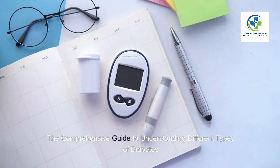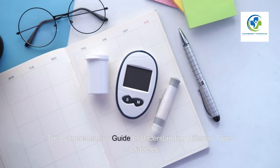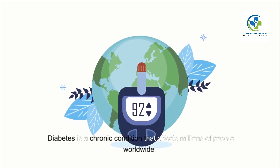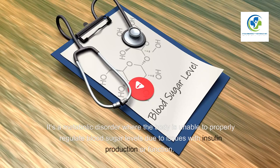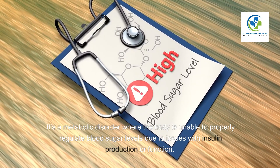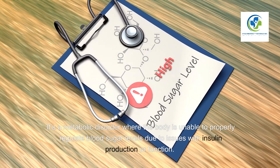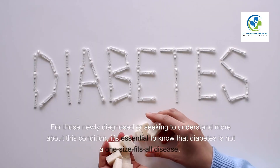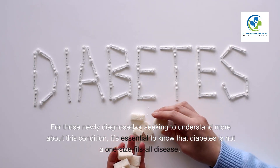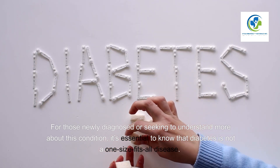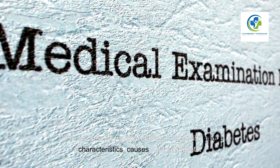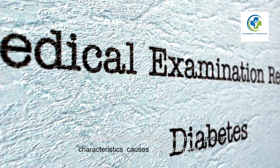The comprehensive guide to understanding different types of diabetes. Diabetes is a chronic condition that affects millions of people worldwide. It's a metabolic disorder where the body is unable to properly regulate blood sugar levels due to issues with insulin production or function. For those newly diagnosed or seeking to understand more, it's essential to know that diabetes is not a one-size-fits-all disease — there are several types, each with unique characteristics, causes, and treatments.